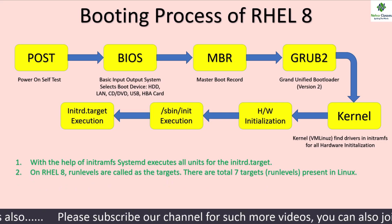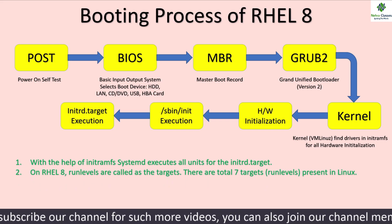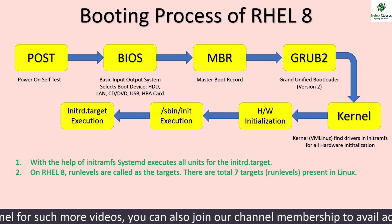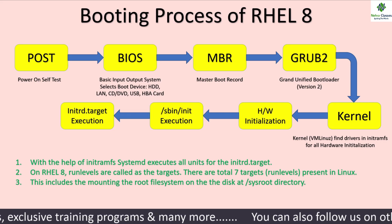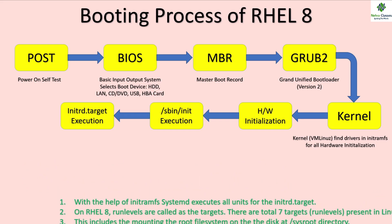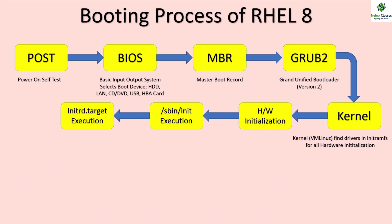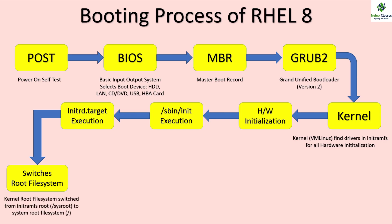On RHEL 8, run levels are called targets and there are a total of 7 run levels present in Linux. systemd executes all units for initrd.target, which includes mounting the root file system on disk at the /sysroot directory temporarily. Then it switches the root file system permanently from /sysroot to the / directory. After that, systemd re-executes itself. The kernel root file system is switched from the initramfs root (/sysroot) to the system root file system (/).